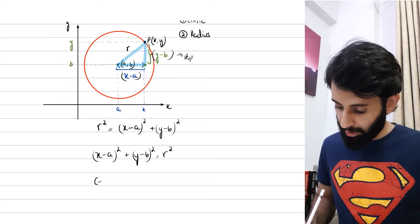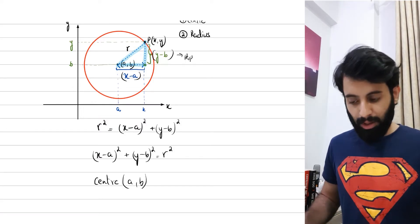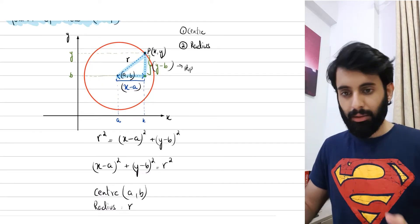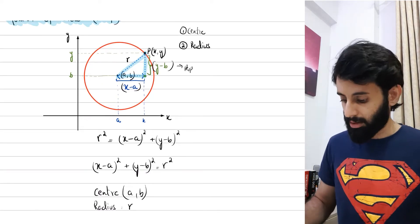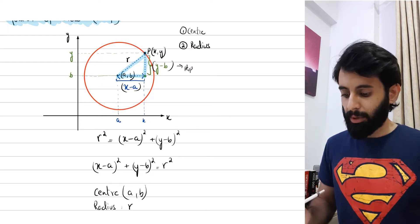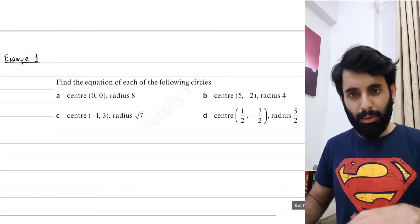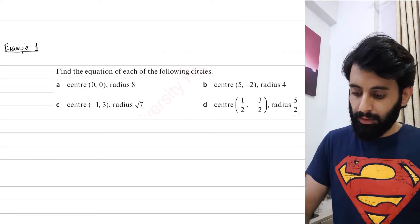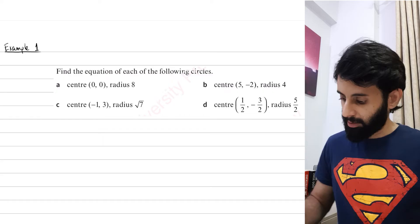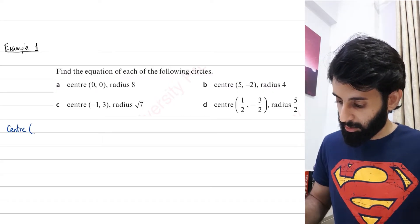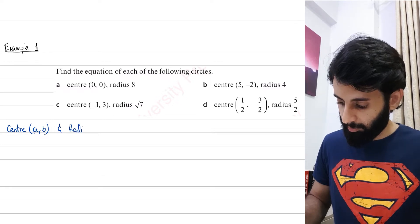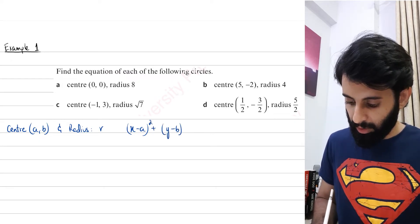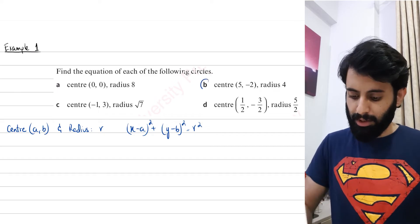With that out of the way, I'm going to jump straight to a few example questions so we can apply what we just learned and cement this concept. Before we do these questions, let me write down the general form of the equation of a circle: with center (a, b) and radius r, the general form is always (x − a)² + (y − b)² = r².